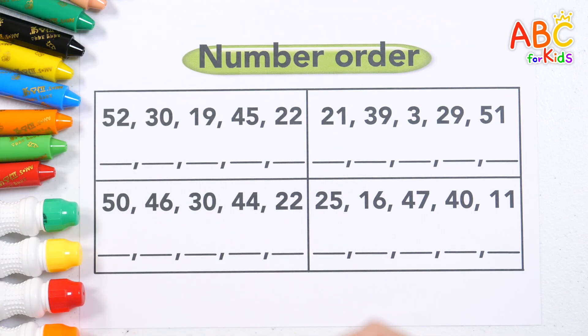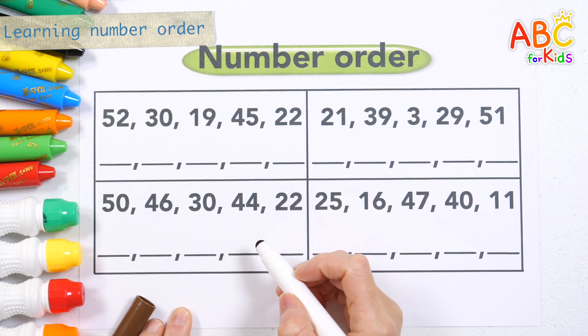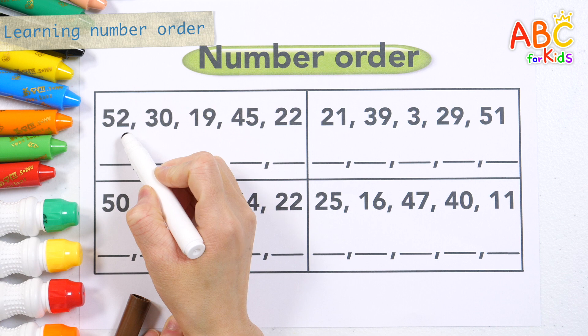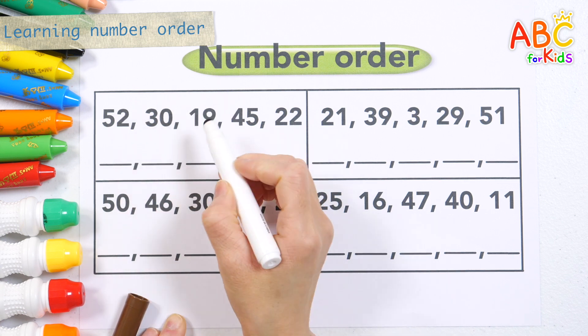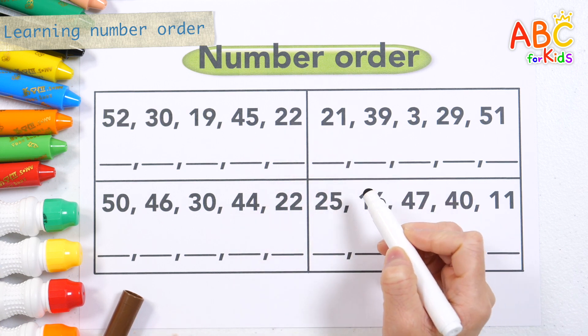Let's learn the order of numbers. Shall we read the numbers together? 52, 30, 19, 45, 22.